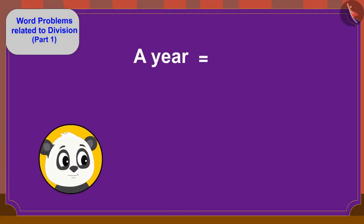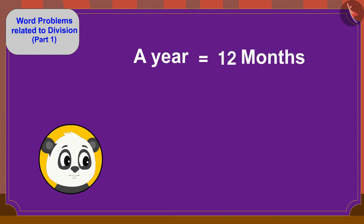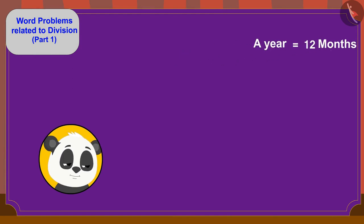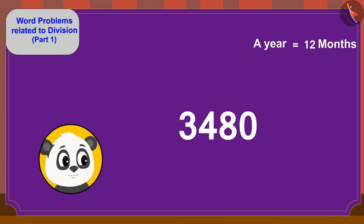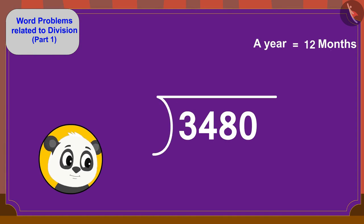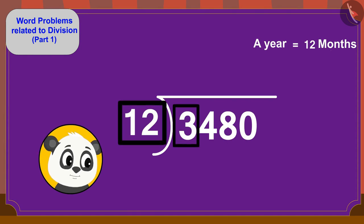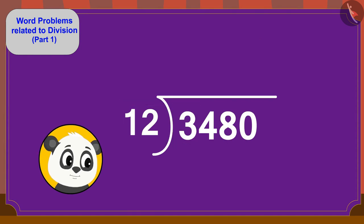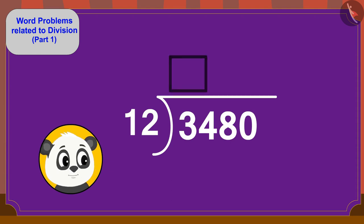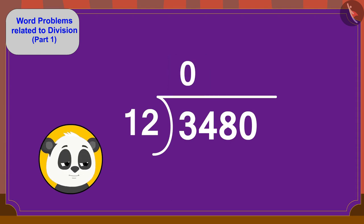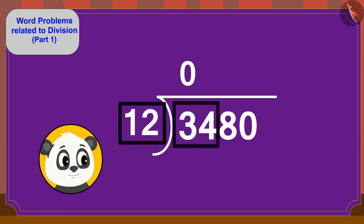A year has 12 months. Therefore, we will divide 3480 by 12. Can we divide 3 by 12? No. So, we will write 0 up here. Now, can we divide 34 by 12? Yes!